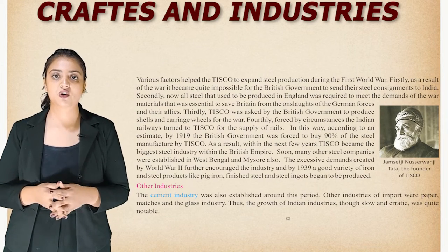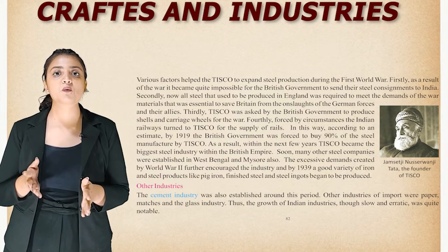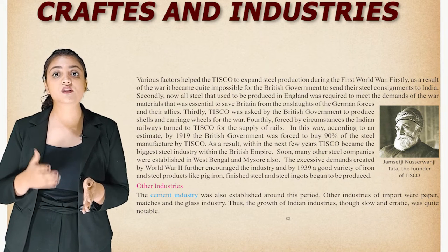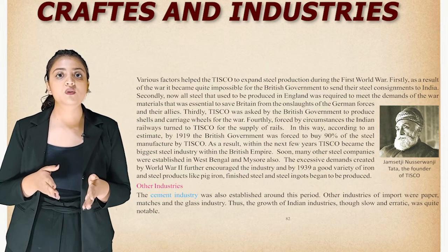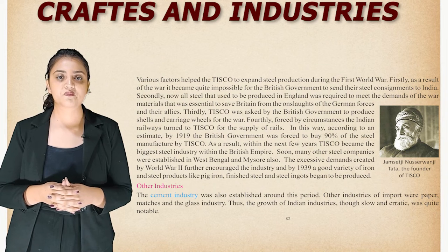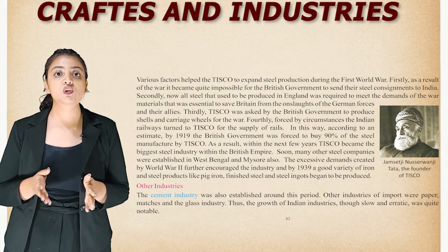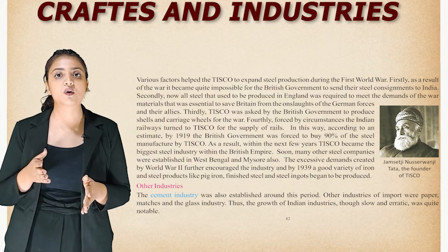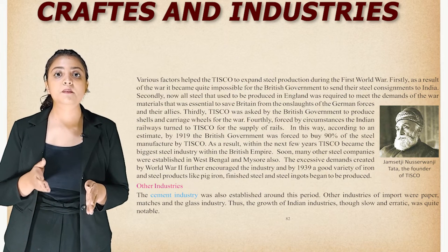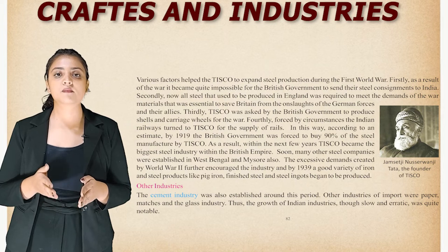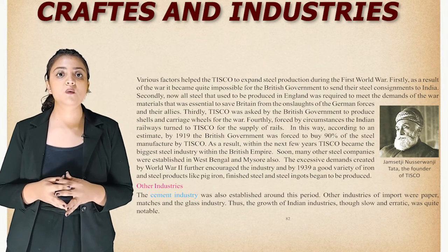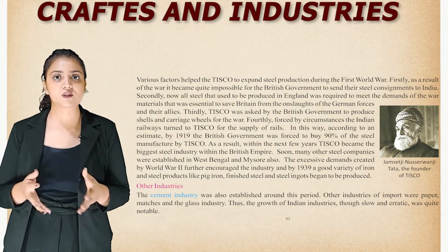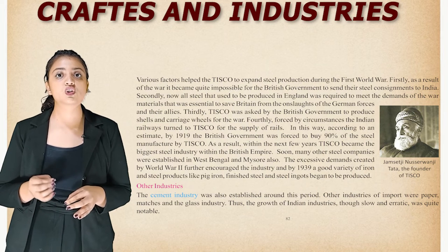Various factors helped TISCO expand steel production during World War One. First, it became quite impossible for the British government to send steel consignments to India. Second, all steel produced in England was required to meet the demands of war material needed to defend Britain. Third, TISCO was asked by the British government to produce shells and carriage wheels for the war. Fourth, the Indian railways turned to TISCO for the supply of rails. By 1919, the British government was forced to buy 90 percent of the steel manufactured by TISCO. Within the next few years, TISCO became the biggest steel industry within the British Empire.